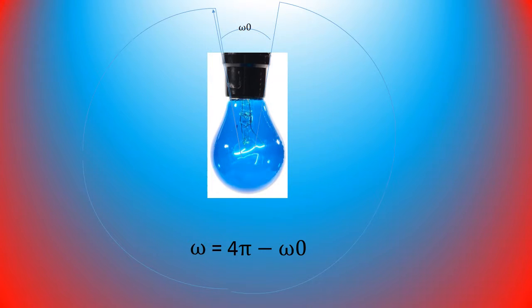A 200 watt GLS lamp radiates all the flux in all directions and these directions are 4π solid angle, but there is an obstruction by the cap which is about ω₀. Therefore the net angle available for radiation of 3000 lumen is 4π minus ω₀.